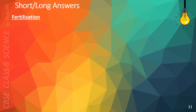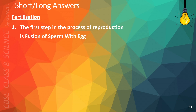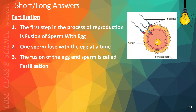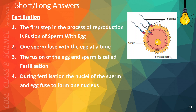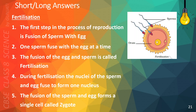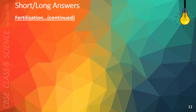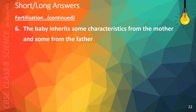The following points will help you answer questions on fertilization. The first step in the process of reproduction is fusion of sperm with the egg. This is a picture of the fusion of sperm with the egg. One sperm fuses with the egg at a time. The fusion of the egg and sperm is called fertilization. During fertilization, the nuclei of the sperm and egg fuse to form one nucleus. The fusion of the sperm and egg forms a single cell called zygote. This is a picture of fusing nuclei.